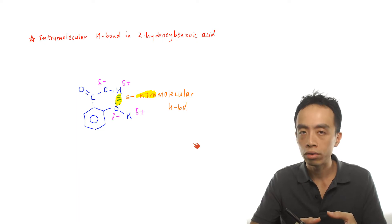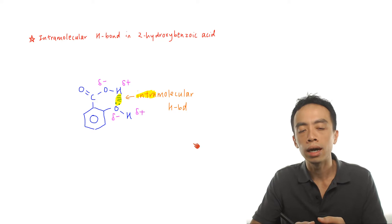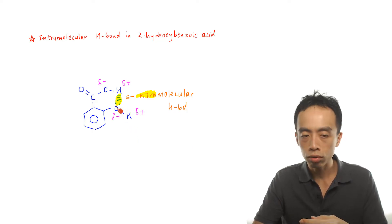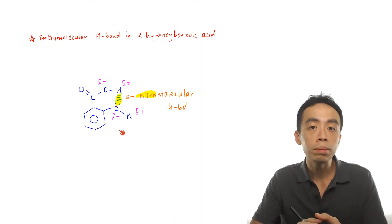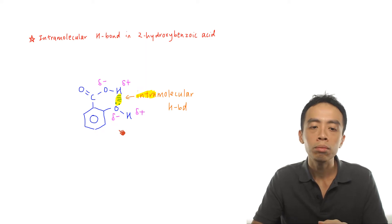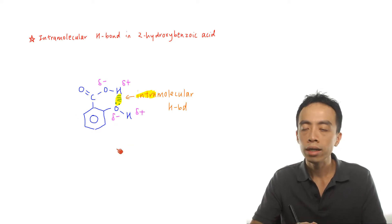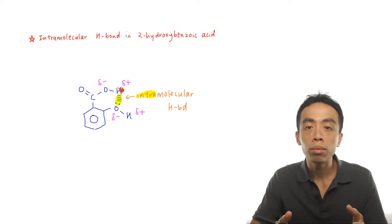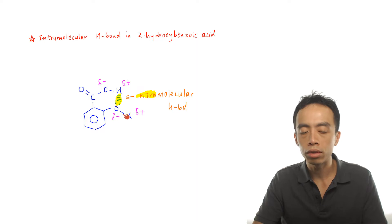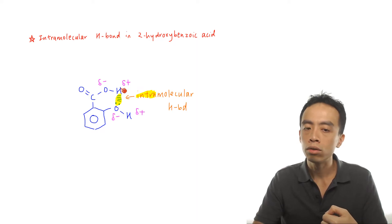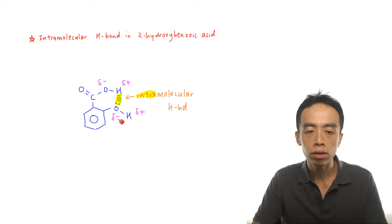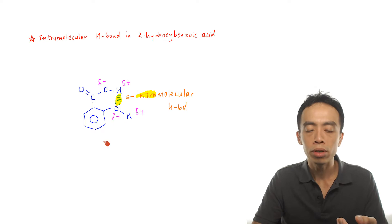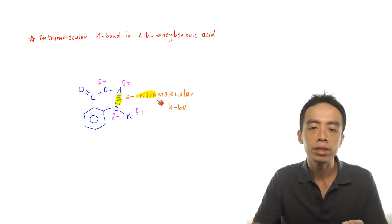Conversely, for 2-hydroxybenzoic acid, because the hydroxy group and the acid group are very near to each other — the OH group is at position 2, just next to the acid group — it is capable of forming a hydrogen bond between this hydroxy group and the acid group within the same molecule. We call this type of hydrogen bond, which is within the same molecule, an intramolecular hydrogen bond. The intramolecular hydrogen bonding is shown here: the oxygen from the hydroxy group is partial minus, and the hydrogen from the acid group is partial positive, so this delta minus oxygen and delta positive hydrogen interact as intramolecular hydrogen bonding.